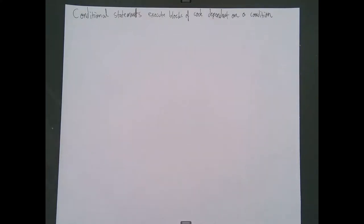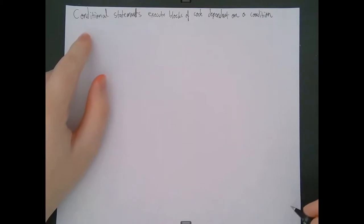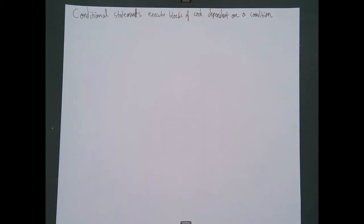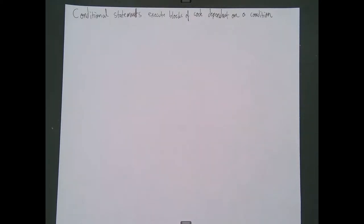Hey everybody. Today we're talking about conditional statements, which are parts of code that actually execute dependently on the truth value of a condition. What that means is that sometimes, based on the values of certain variables, how they're related to each other, or based on certain truth statements, you might want certain pieces of code to execute at some times and not execute during other times.